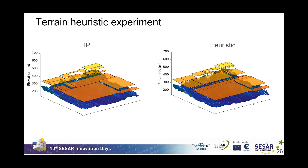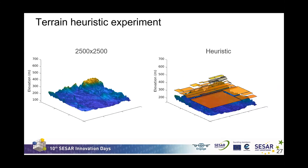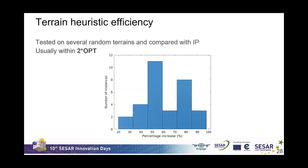We implemented the heuristic and ran it on the same terrain as before, obtaining a similar picture but with a slightly higher number of rectangles. We also applied the heuristic to a high-resolution 2500 by 2500 terrain and running it took just several minutes, compared to the hours required to solve the IP on a much smaller 60 by 60 instance. Running on randomly generated terrains, we observed that the heuristic is usually within two times the optimum obtained from the integer program.